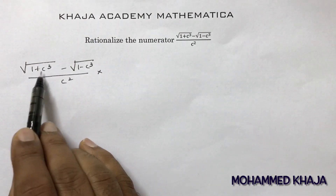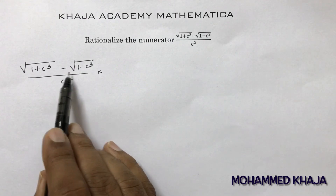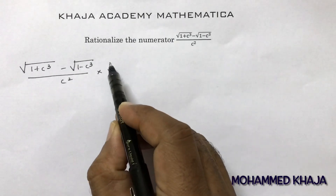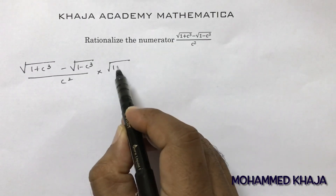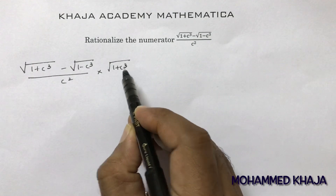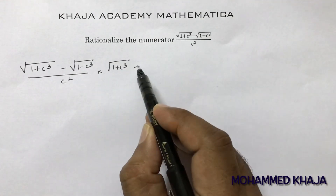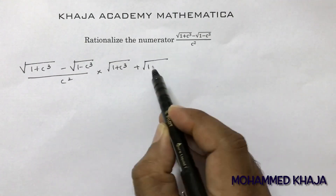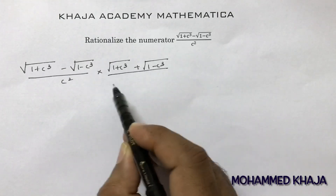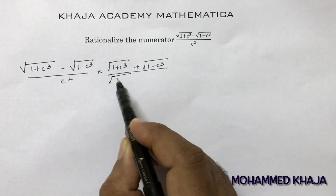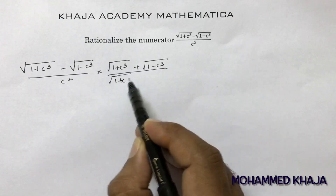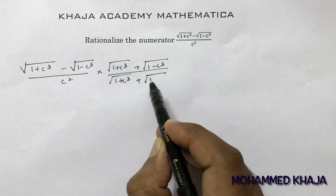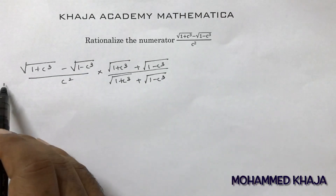The numerator is root(1 + c³) minus root(1 - c³). To rationalize, we multiply by the conjugate: root(1 + c³) plus root(1 - c³), over root(1 + c³) plus root(1 - c³).